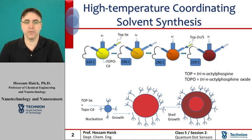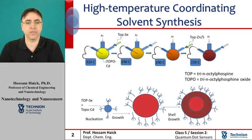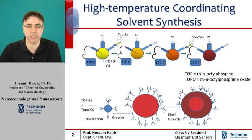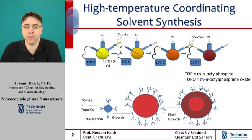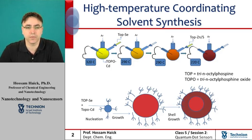The solvent must be stable at high temperature and must act as a surfactant molecule for stabilization of the quantum dot surface to prevent particle aggregation. Specifically, tri-octylphosphine oxide, which is abbreviated as TOPO, is commonly used due to its high boiling point and its high stability to coordinate both metal and chalcogen elements.